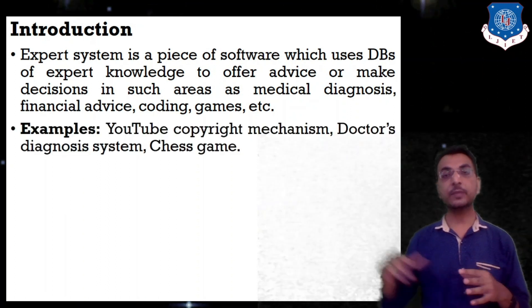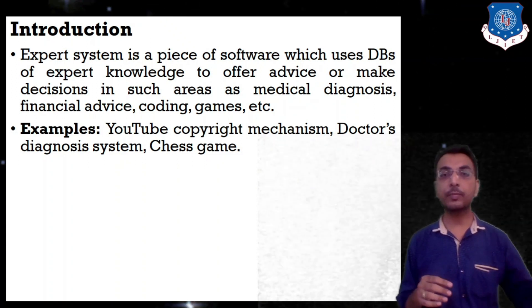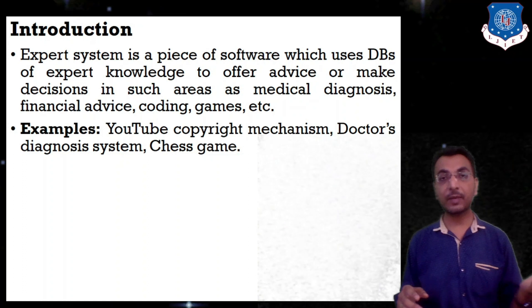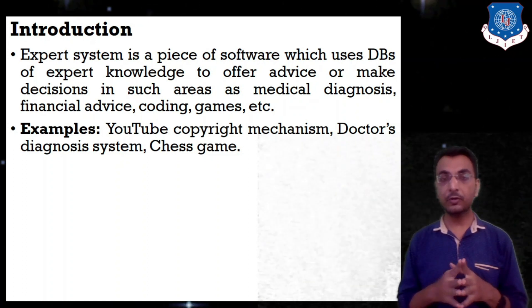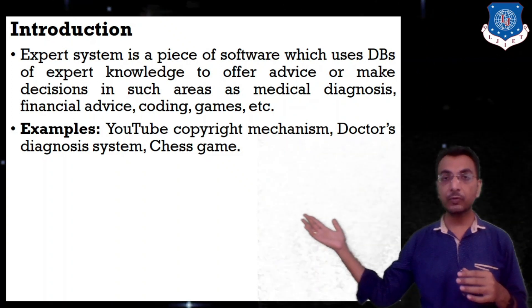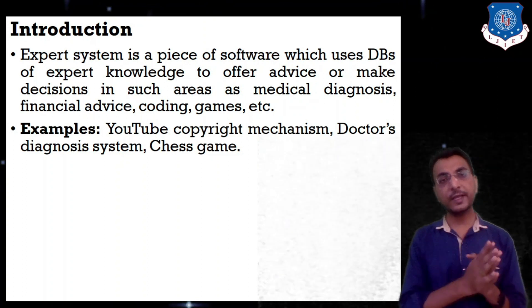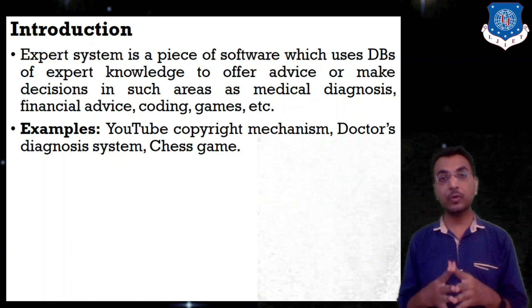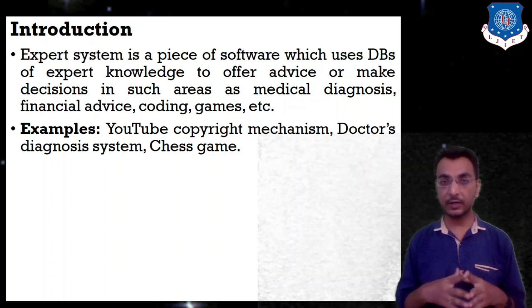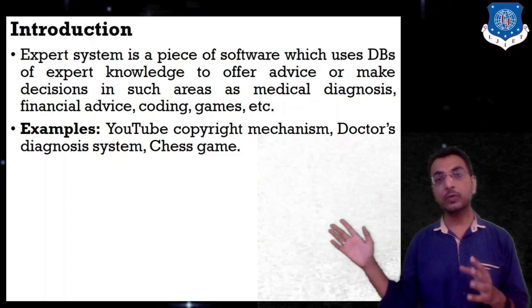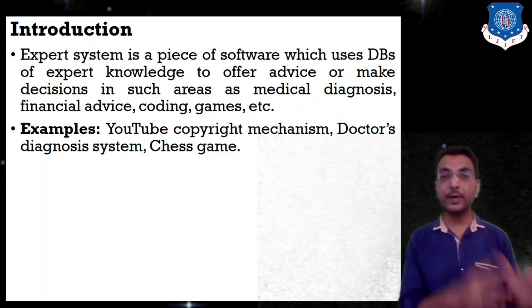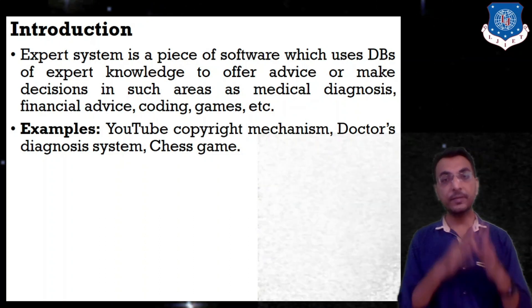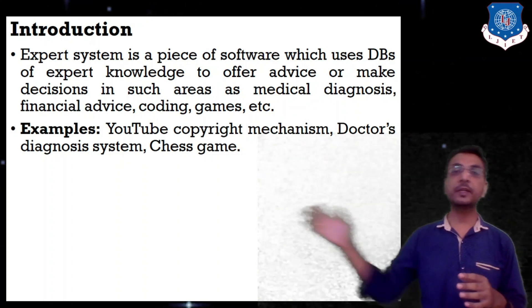Examples of expert systems include YouTube's copyright mechanism — if you upload someone else's video, YouTube will ban or cancel that video. There is no person manually reviewing every upload; that task is carried out by an expert system. Similarly, a doctor's diagnosis system and chess games are examples. If a robot is trained to play chess at an expert level, that robot is called an expert system.